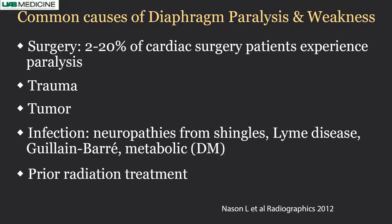Infection is a major category. What we often call idiopathic elevation is usually infection. In addition to regular viral infection, patients who have shingles, Lyme disease, or even Guillain-Barré syndrome can have phrenic nerve involvement. Even metabolic causes — such as diabetic metabolic acidosis — can affect the phrenic nerves.